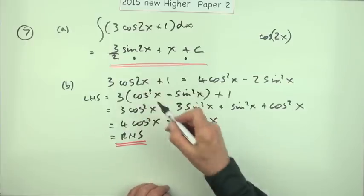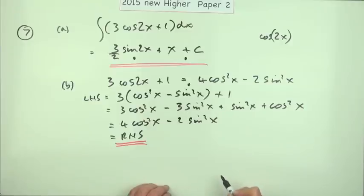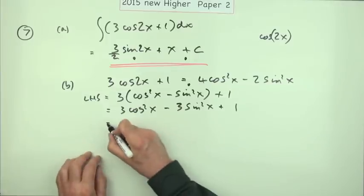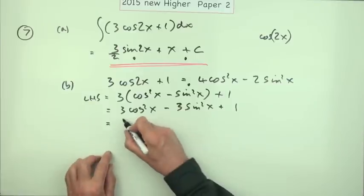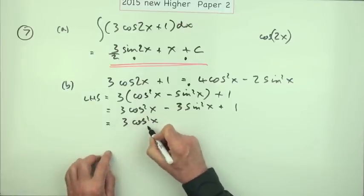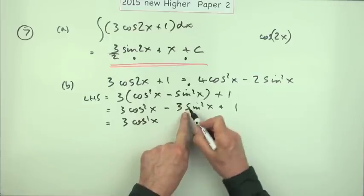And the two marks here were one for changing the cos 2x and the other one for knowing how to deal with that one to achieve the result you needed. Now, another way of doing that might have been to say, well, oh, I'll leave my three cos squared x there, but I don't want one of them.